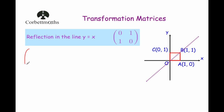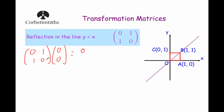So let's take the matrix [0, 1, 1, 0] and multiply it by each of the points. Starting with point O, which is (0, 0). We get 0 times 0 is 0, plus 1 times 0 is 0, adding them together gives 0. And for the second row: 1 times 0 is 0, plus 0 times 0 is 0, adding them gives 0. So the point O will stay where it is — that's where O dash will be.